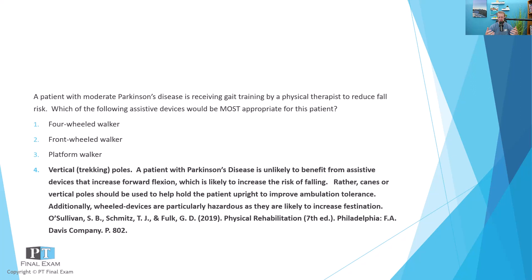That forward flexion would then lead to increased festination, especially with a wheeled device. Wheeled devices are particularly hazardous for these patients as they are likely to increase festination. So with Parkinson's disease, you'll want something that's more stable and holds them more upright. Canes and vertical poles or trekking-type poles would be your best bet when it comes to assistive devices. That said, assistive devices are a bit of a catch-22 with Parkinson's disease, simply because these patients have difficulty initiating movement — especially if there's something they're trying to move at the same time, like a cane or a pole, it does become more difficult. A lot of times these folks would benefit from a single-point cane or bilateral trekking poles.